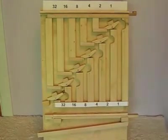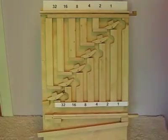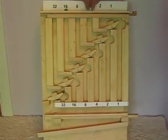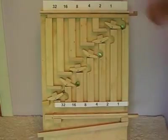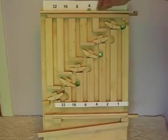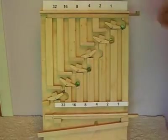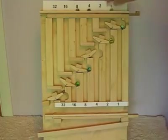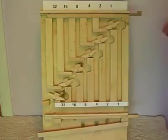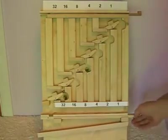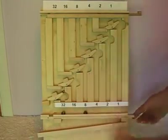Now we shall add several more numbers. We shall add 21, which is 16 plus 4 plus 1, to 6, which is 4 plus 2, to 13, which is 8 plus 4 plus 1. And the result is 32 plus 8, which is 40.